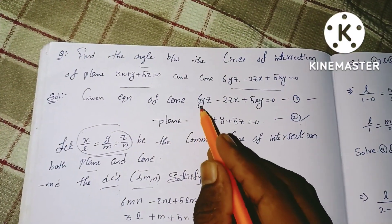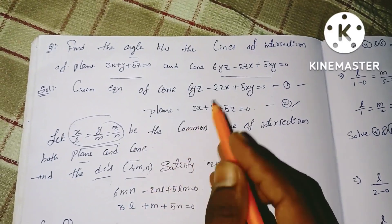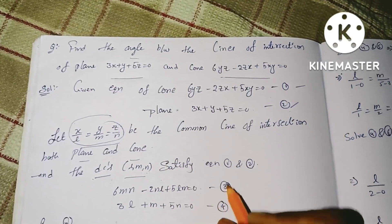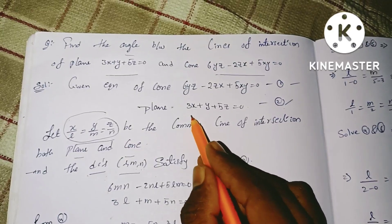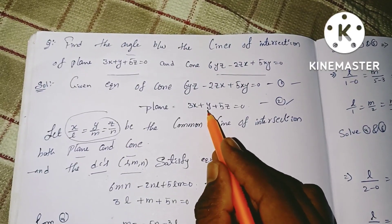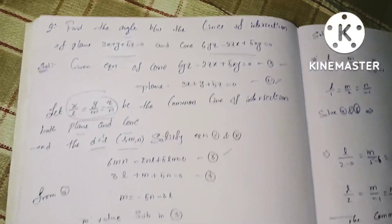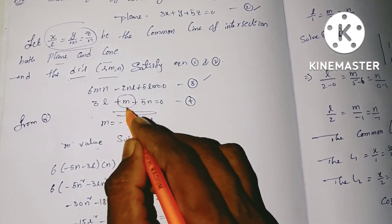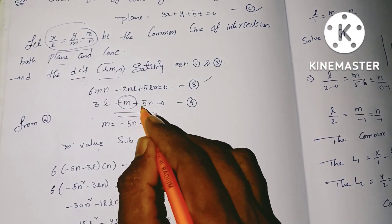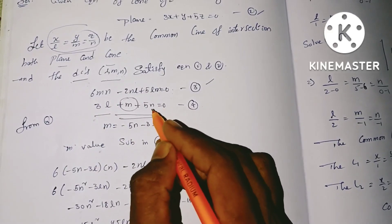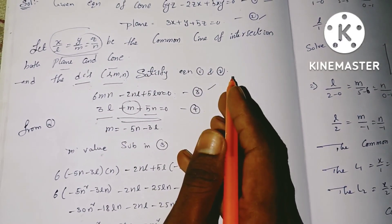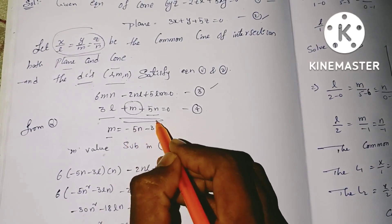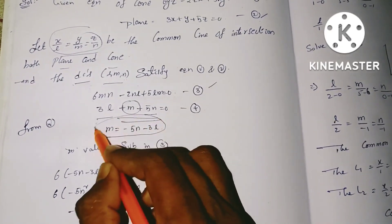We will show that 6YZ, giving us 6MN minus 2NL plus 5LM is equal to 0. This is equation 3. From equation 3, we have the M value. M is equal to plus 3L, that is minus 3L, plus 5L, that is minus 5L. So M is equal to minus 5L minus 3L. Now, the M value is from equation 3.